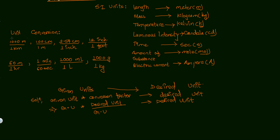Before converting one unit to another, we need to know the conversion factor. A conversion factor is a fraction containing two kinds of units where both quantities are the same, just expressed differently. For example, 1000 meters equals one kilometer. Other key conversion factors: 100 cm = 1 m; 2.54 cm = 1 inch; 12 inches = 1 foot; 60 minutes = 1 hour; 60 seconds = 1 minute; 1000 mL = 1 L; 1000 g = 1 kg.